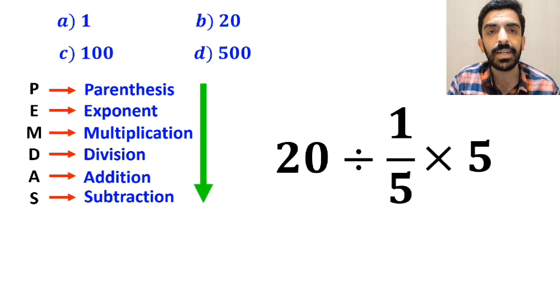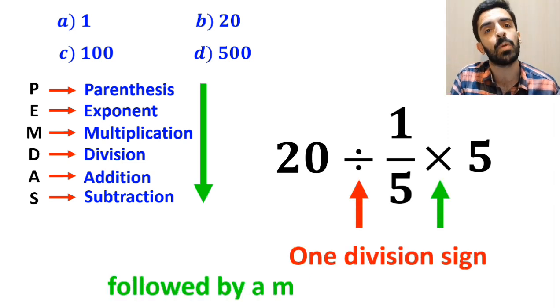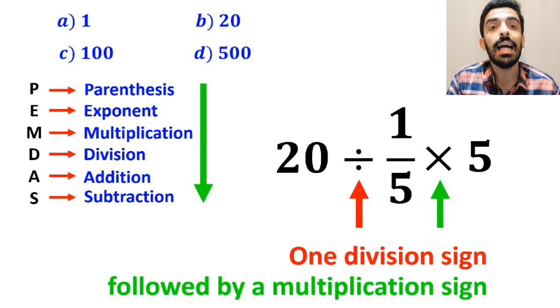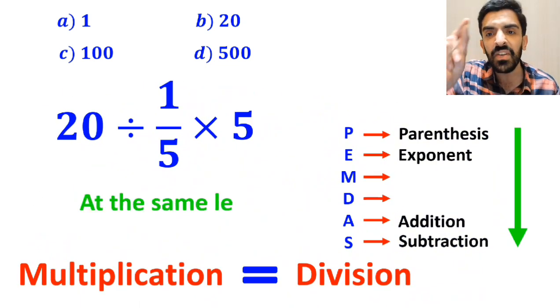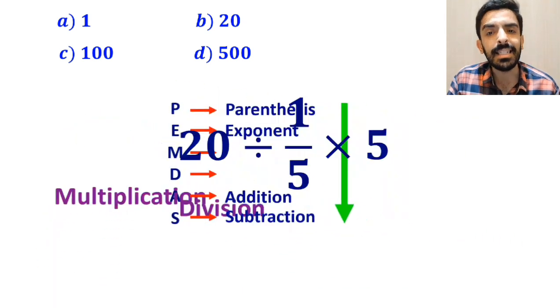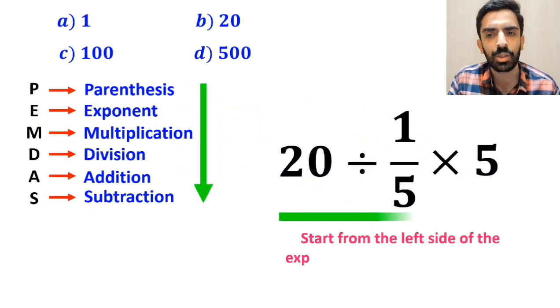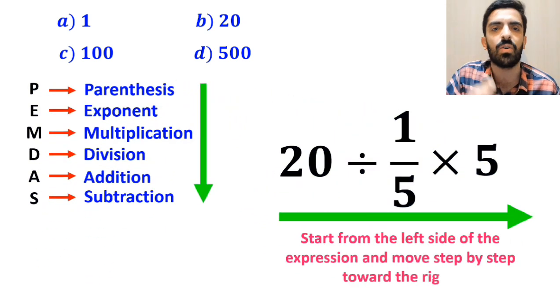Alright, as you can see on the screen, in this expression we have one division sign followed by a multiplication sign. It's very important to note that multiplication and division are at the same level of precedence. In this case, the best thing to do is to solve from the left side of the expression and move step by step toward the right.